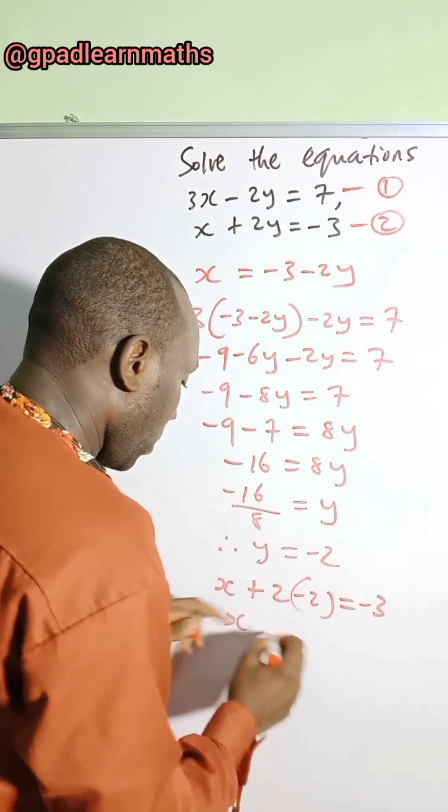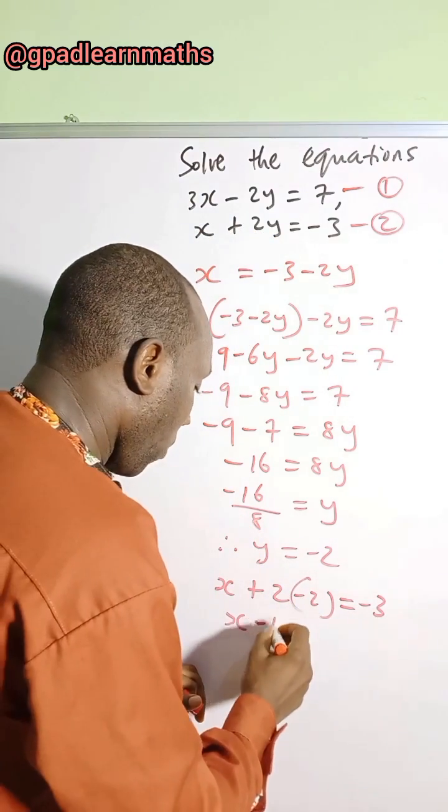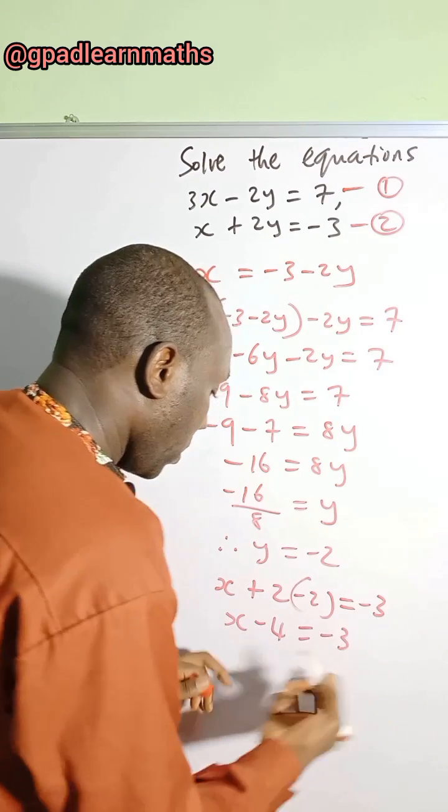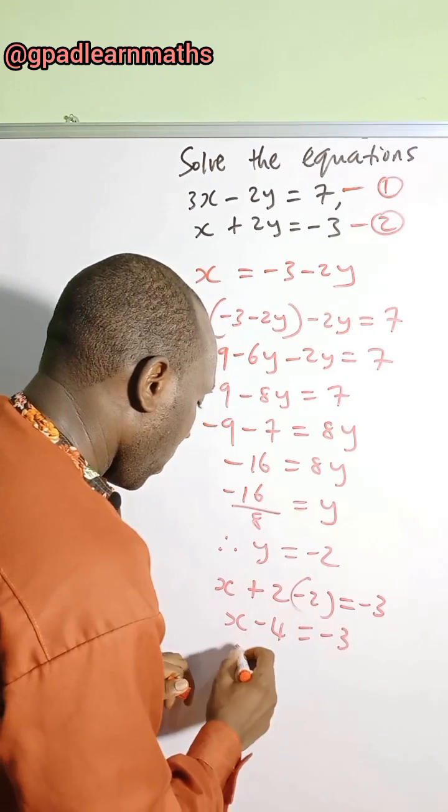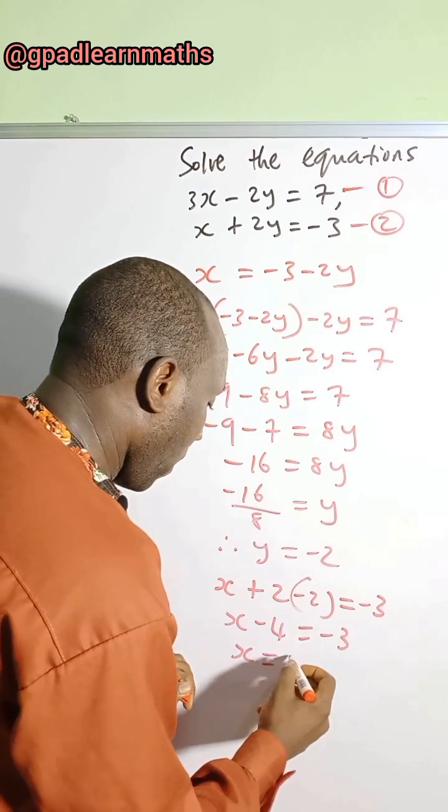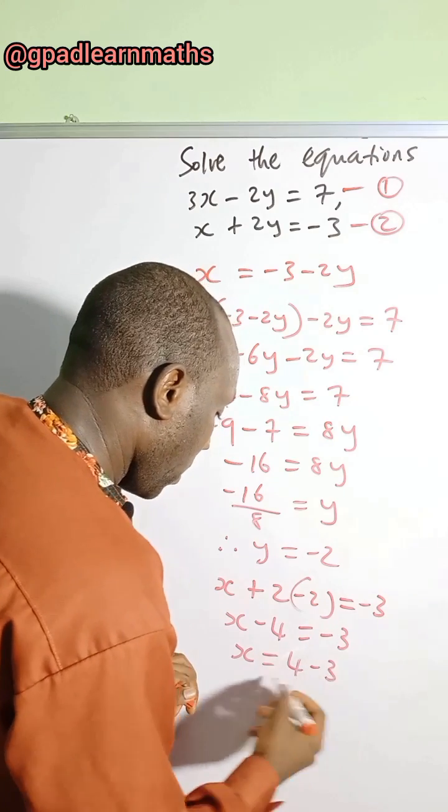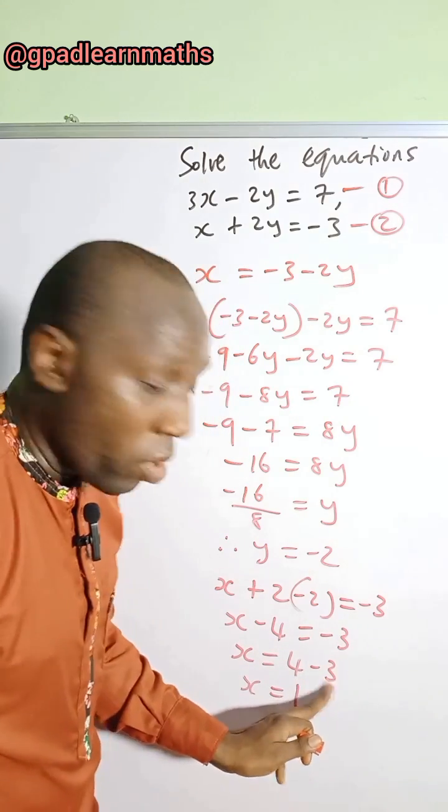So x, 2 times minus 2 is minus 4. That's equal to minus 3. If you move minus 4 to the right hand side, you are going to have 4 minus 3. So x is equal to 1. 4 minus 3 is 1.